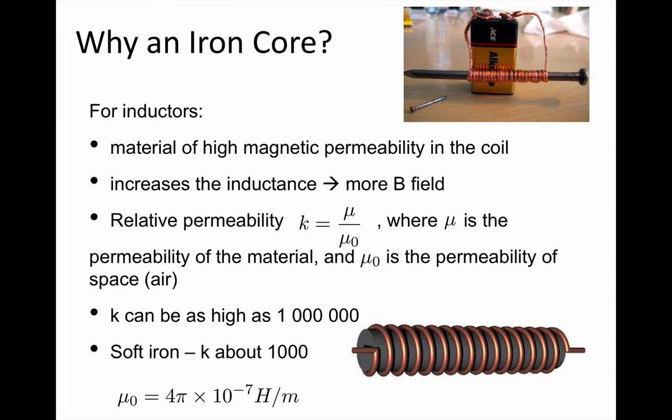Well, it's the same idea with solenoids. So for solenoids that are inductors, if we put a material of high magnetic permeability inside the coil, that increases the inductance. In other words, the coil is producing more magnetic field per unit of current than one of the same size that had air in the middle. The relative permeability k is the permeability of a material divided by the permeability of free space, which is 4 pi times 10 to the minus 7 henrys per meter.